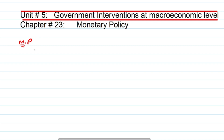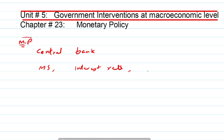Monetary policy is defined as the policy of the central bank of the country. The central bank is the main bank of every country — for Pakistan it is the State Bank of Pakistan, in the USA the Federal Reserve Bank is the central bank, and the Bank of England is the central bank of the UK. This policy manipulates money supply, interest rate, and credit regulations.